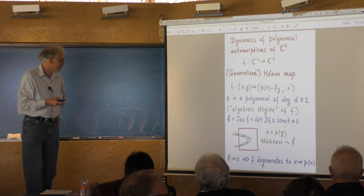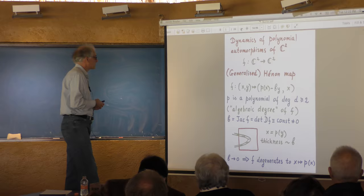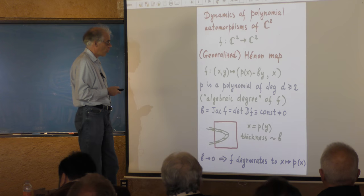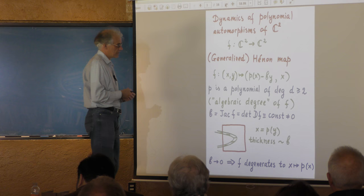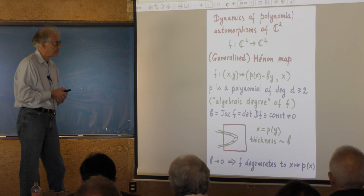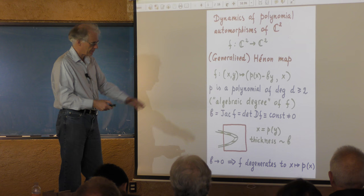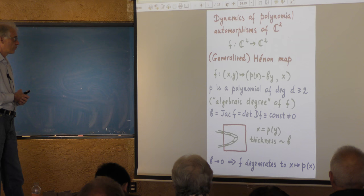Here is the basic setting. We are interested in dynamics of complex polynomial automorphisms of C². The basic example is a generalized Hénon map — a map of this explicit form, where p(x) is some polynomial of one variable of degree at least two. It looks like a quite special example, but it is actually very representative. The general theory is developed along the same lines, and everything I will say applies to general non-trivial polynomial automorphisms of C².